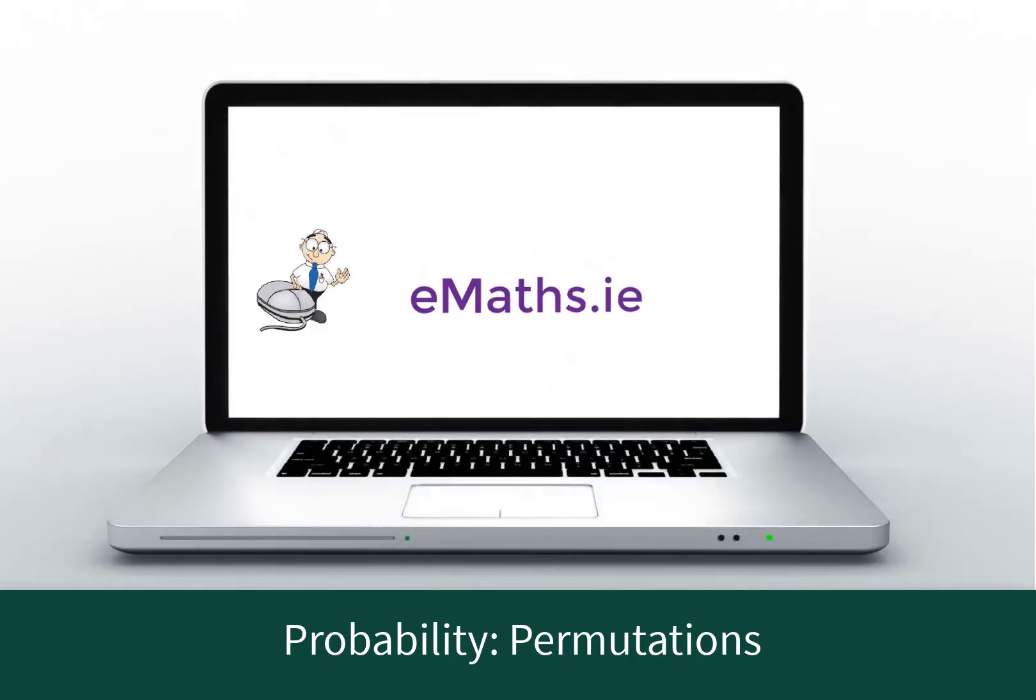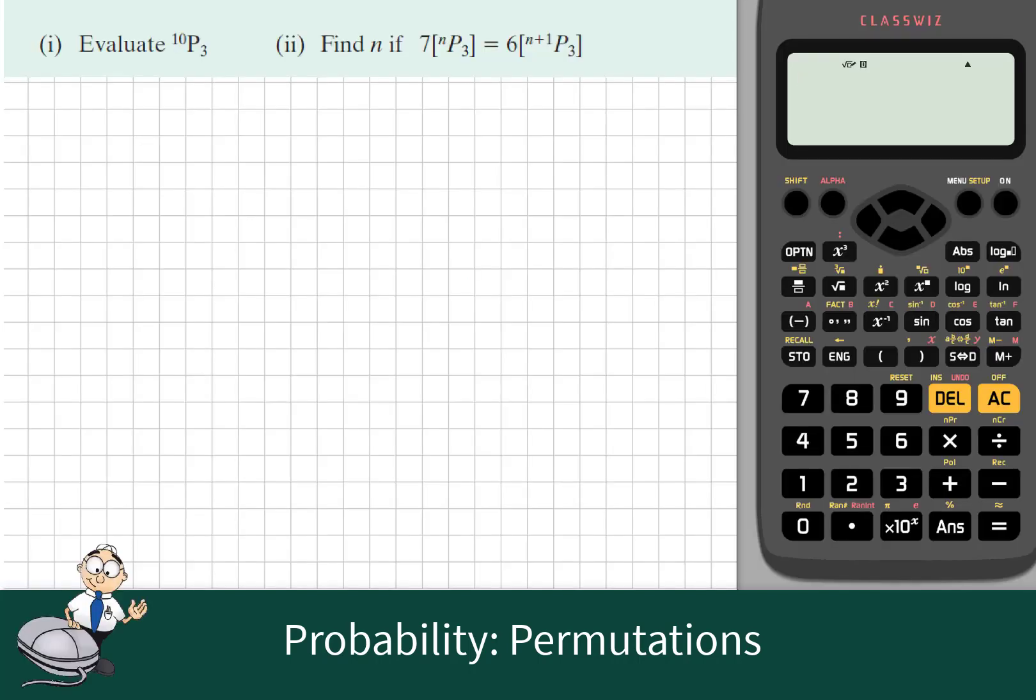Probability, permutations for Leaving Certificate level students. Evaluate 10P3, that's the number of ways that we could choose any 3 objects from 10 different objects and arrange them.